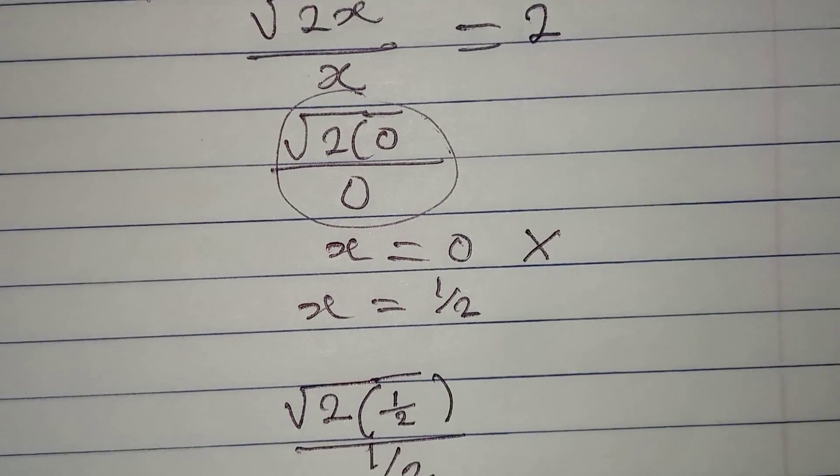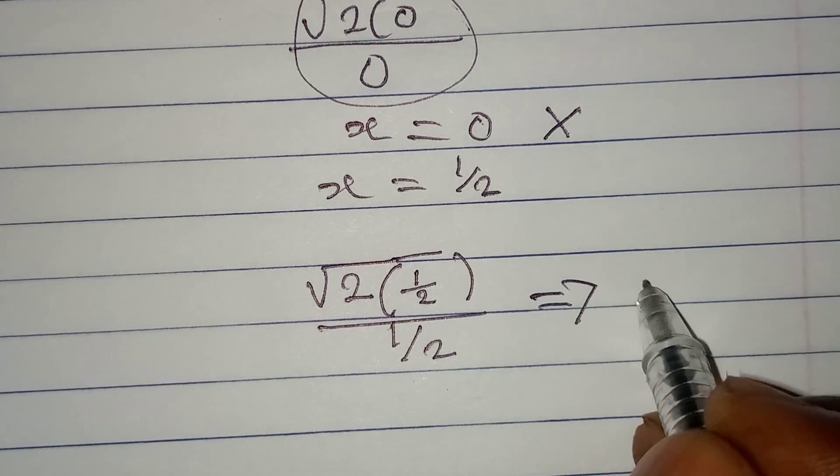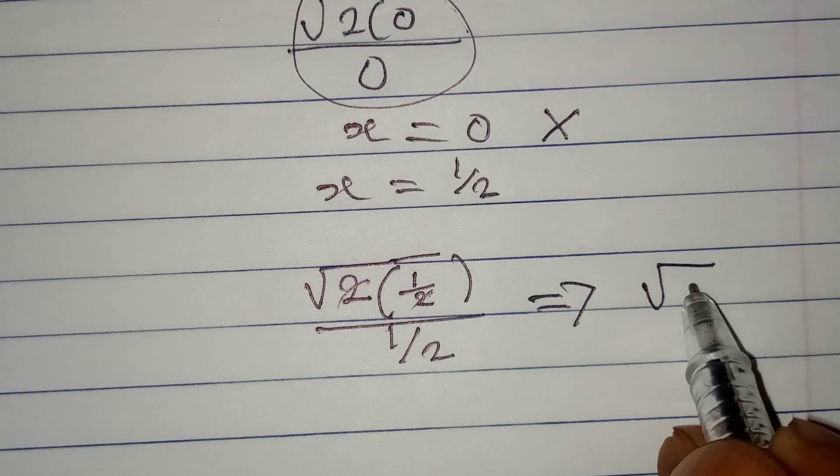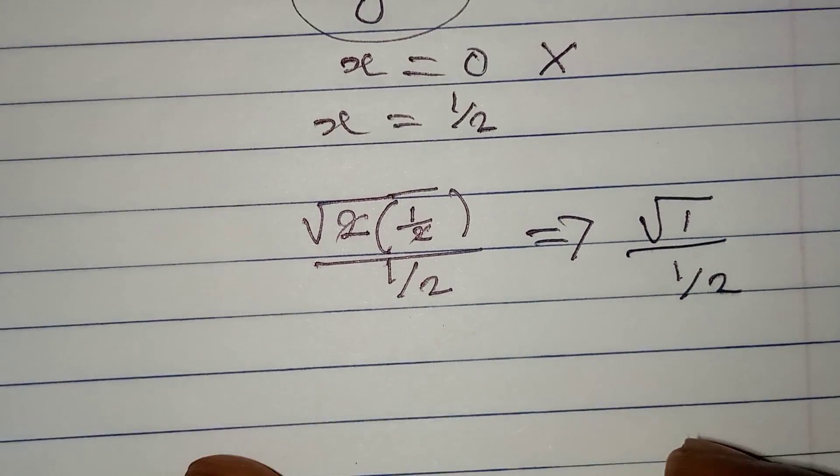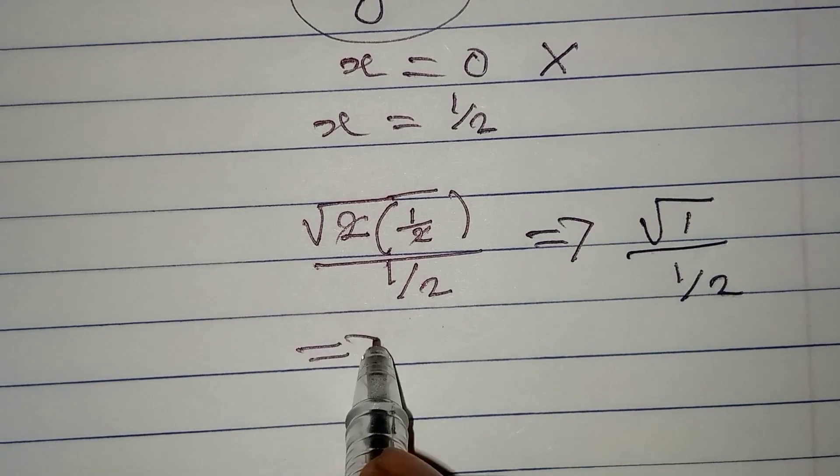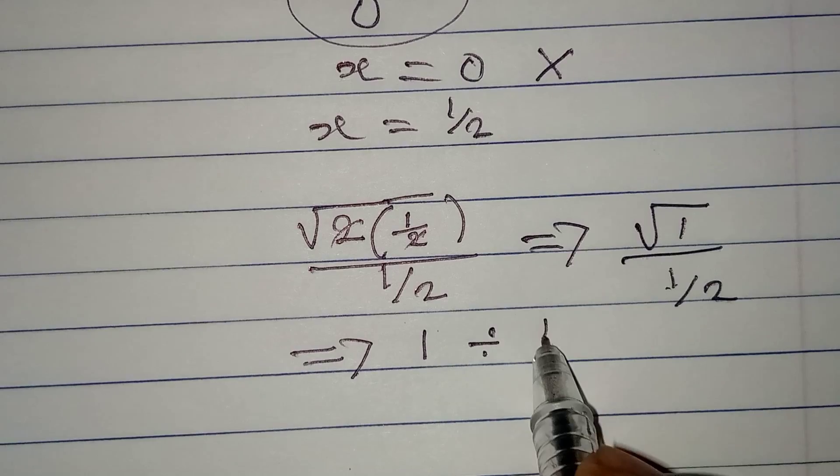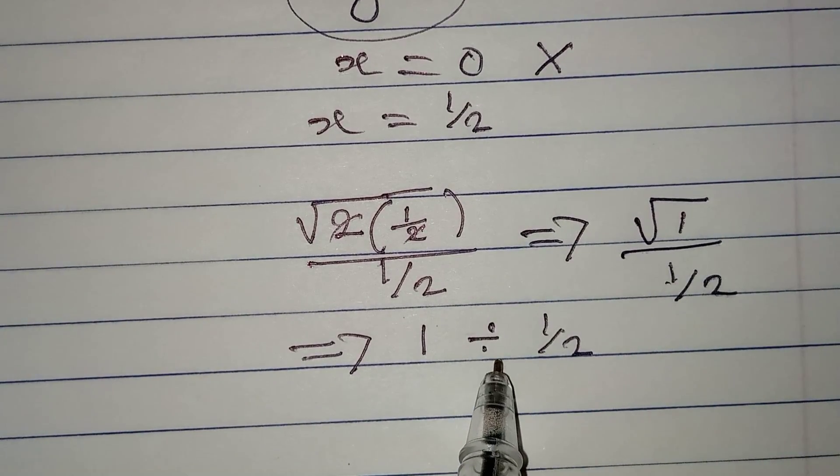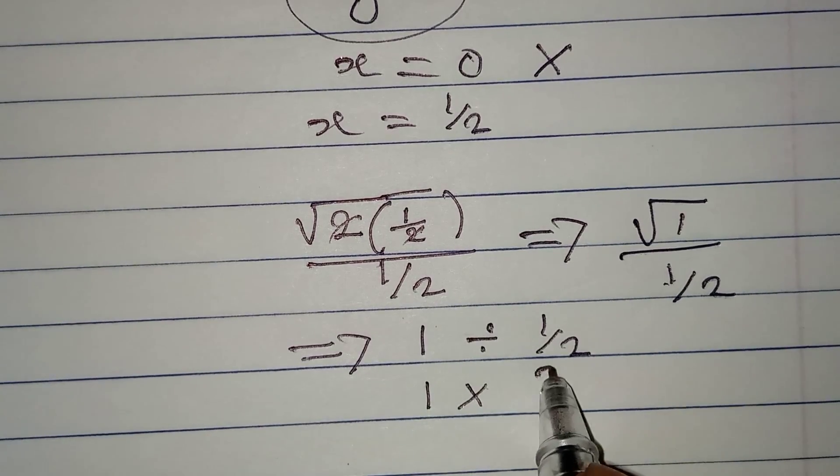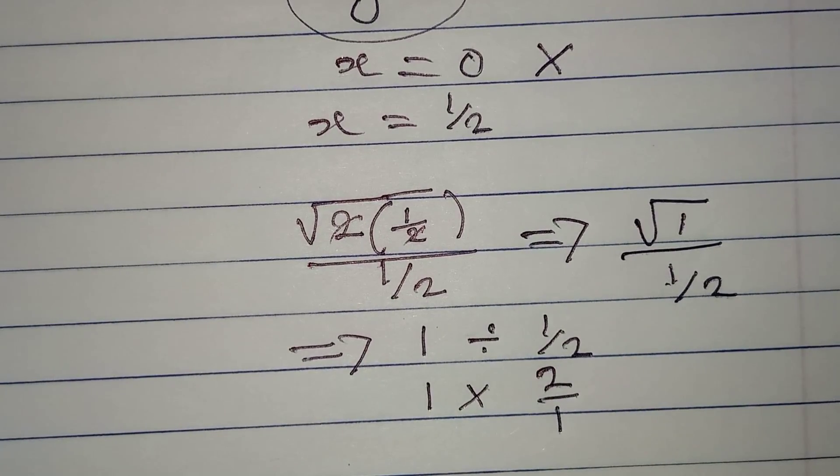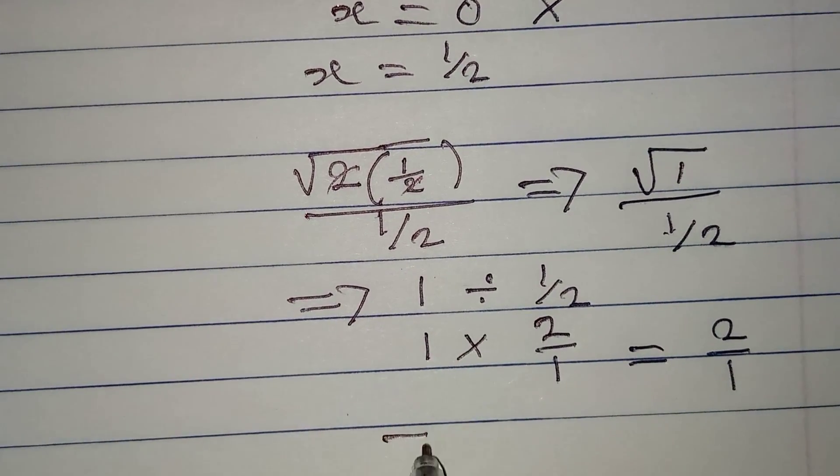Let's give it a try. So if we continue from here then we have square root of 1 all over 1 over 2. And by the way, the square root of 1 will give 1, so we have 1 divided by 1 over 2. Remember that you have to turn this to multiplication, so we have 1 multiplied by 2 over 1. At the end of the day we have 2 over 1, and 2 over 1 is the same thing as 2.